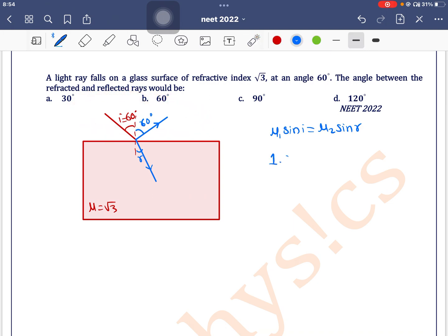Air has refractive index 1, so: 1 × sin 60° = √3 × sin r. Since sin 60° = √3/2, we get √3/2 = √3 sin r. The √3 terms cancel out, giving sin r = 1/2, so r equals 30 degrees.